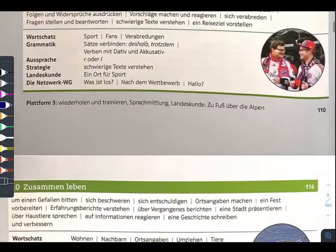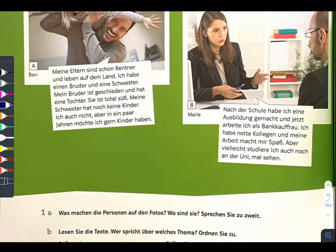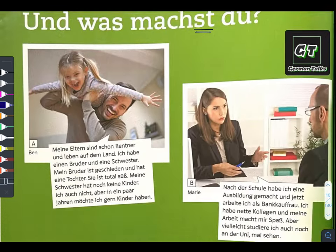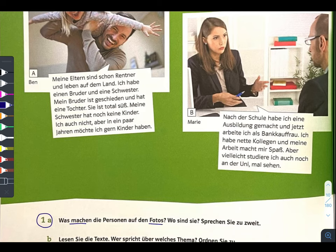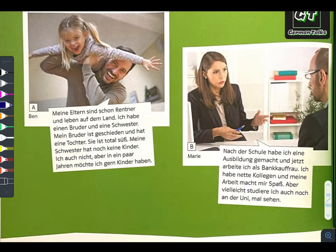So chapter number 1: 'Was und was magst du' — and 'magst' is conjugated according to the subject. Frage number 1: Was machen die Personen auf den Fotos? What are the people doing in the photos and where are they? There are four pictures: A, B, C, D.